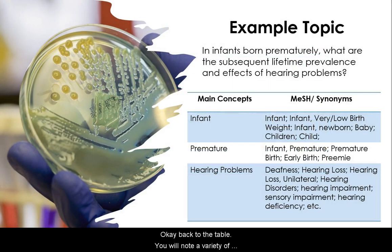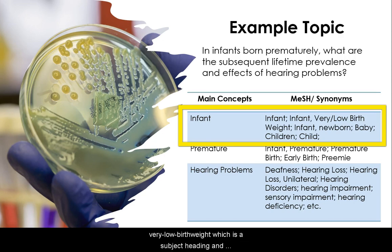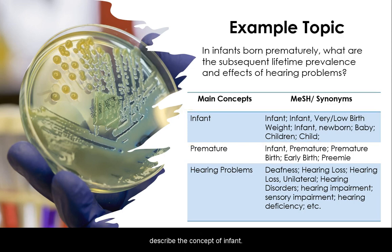Okay, back to the table. You will use a variety of alternative terms. For example, 'infant' is one of my main concepts and I have identified 'infant, very low birth weight,' which is a subject heading in PubMed — a MeSH term — as well as newborn, baby, child, etc. These are all alternative ways to describe the concept of infant.